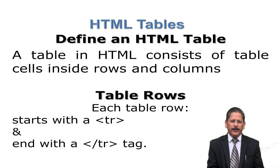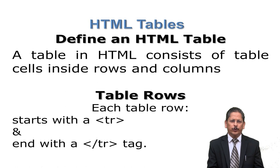A table in HTML consists of table cells inside rows and columns. A table row starts with the TR tag and ends with the closing slash TR tag. As you can see in this slide, where we have three different rows — every row will start with TR and close with slash TR. So three times we will write the TR tag and three times the closing slash TR tag.